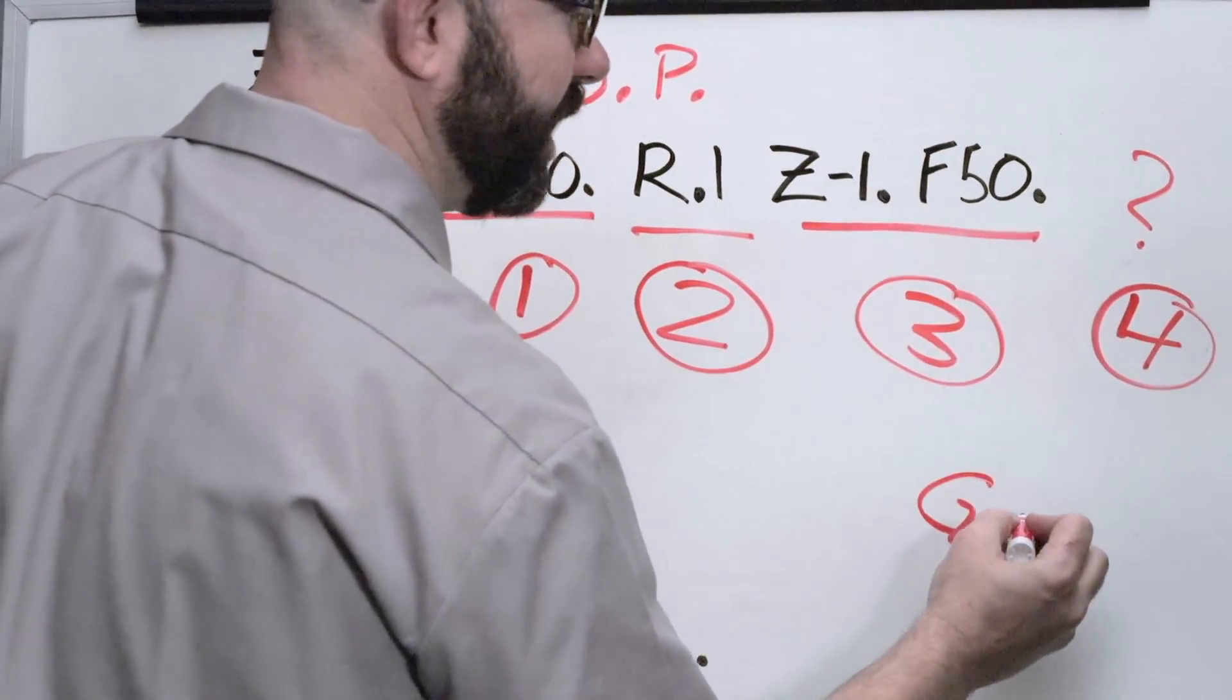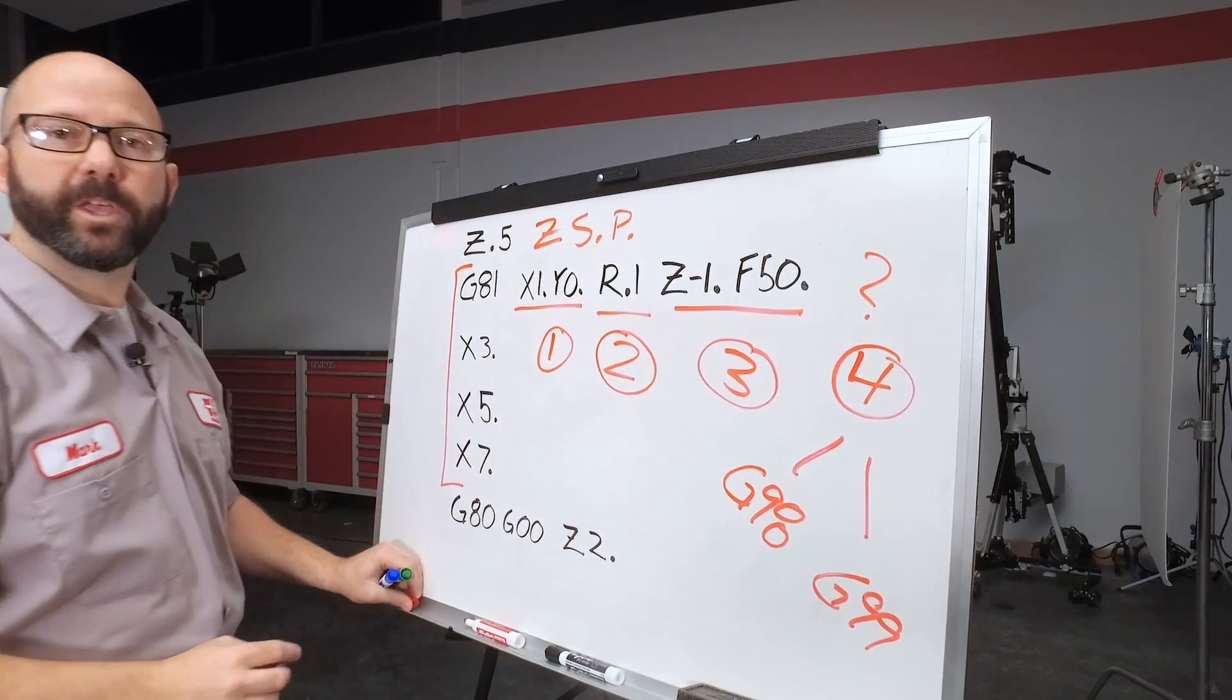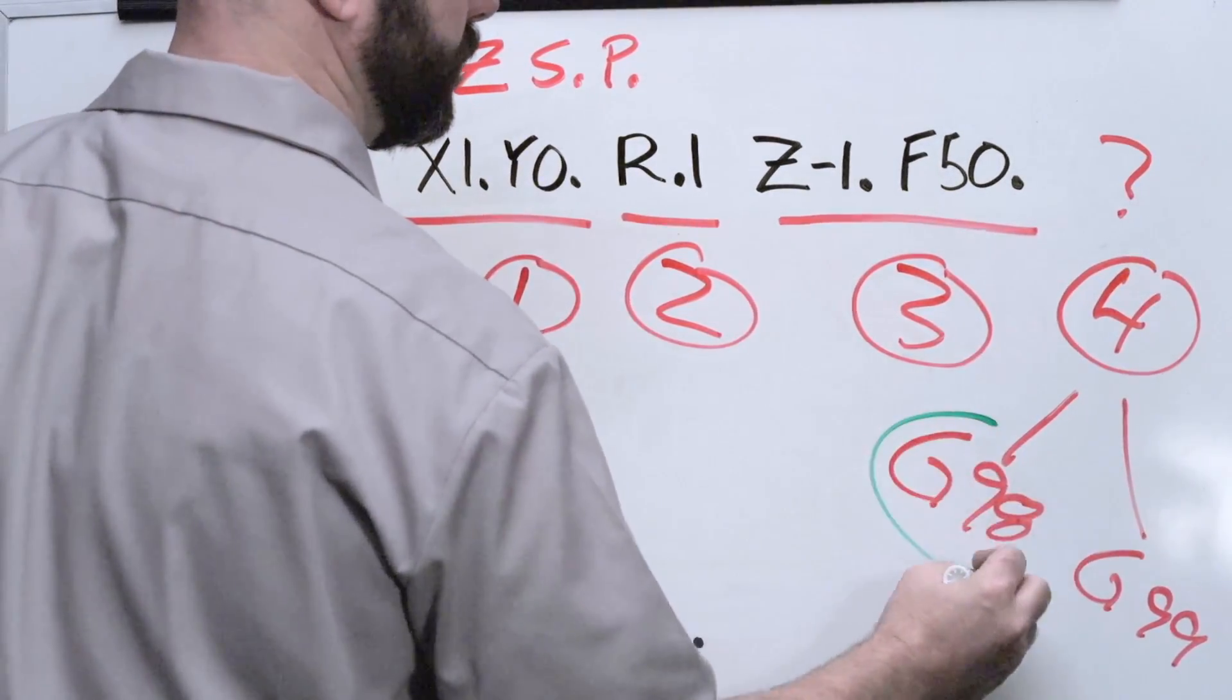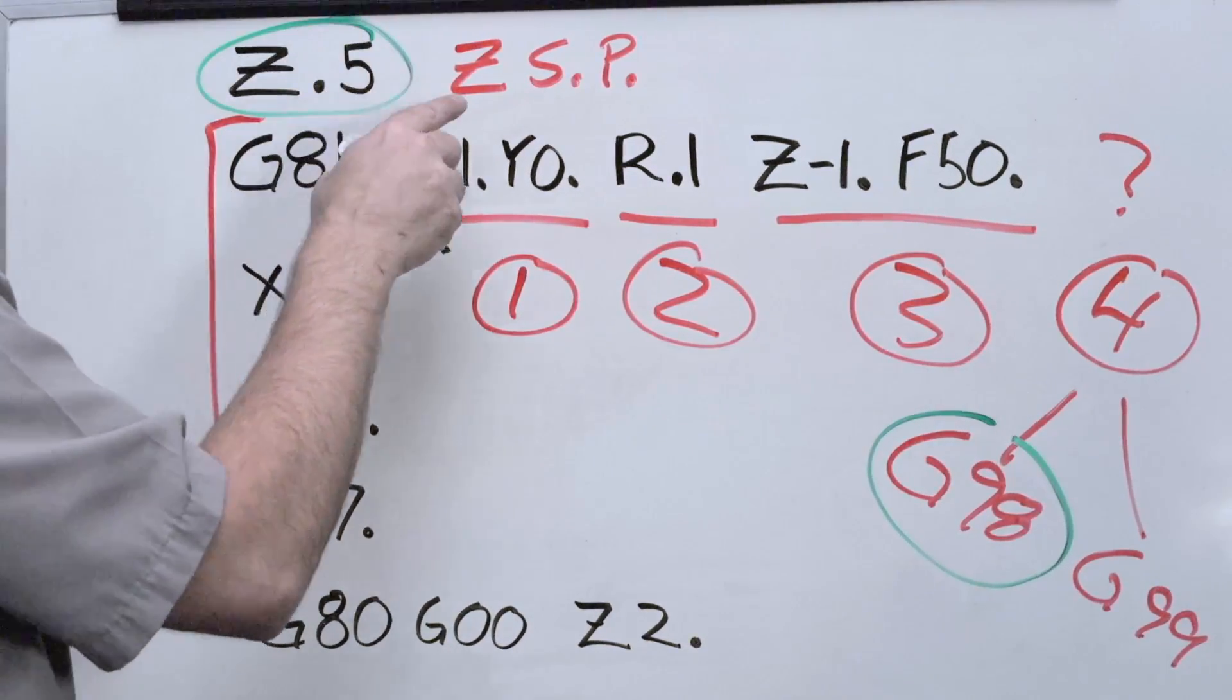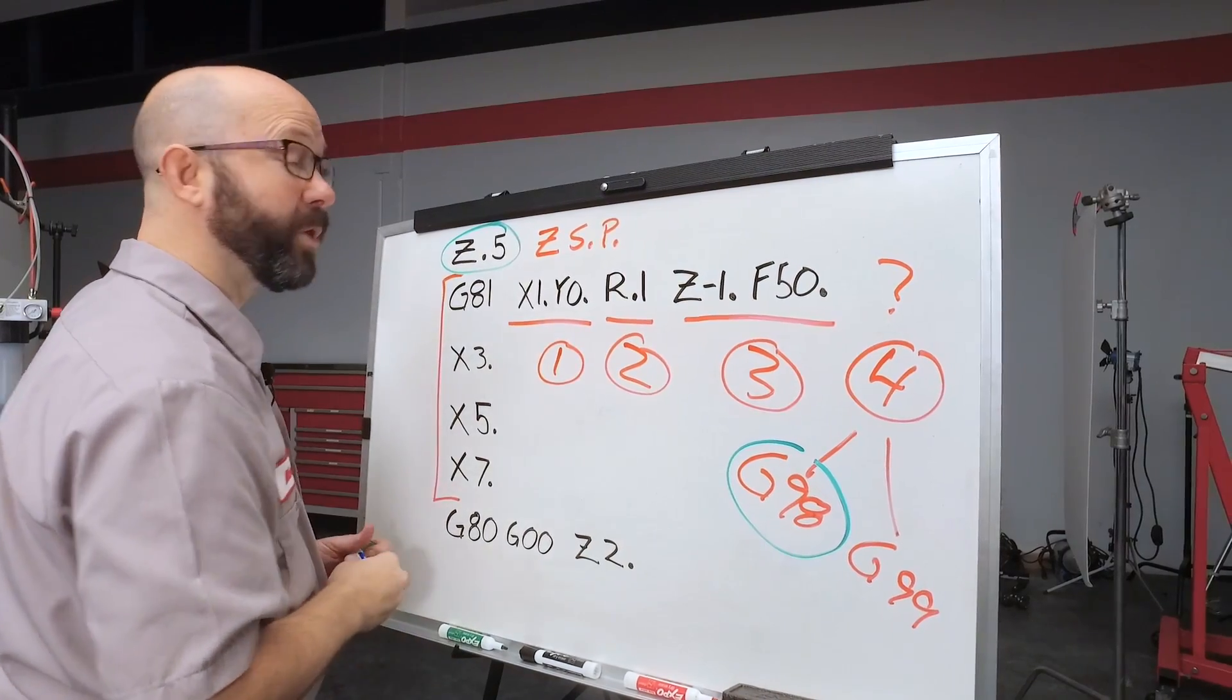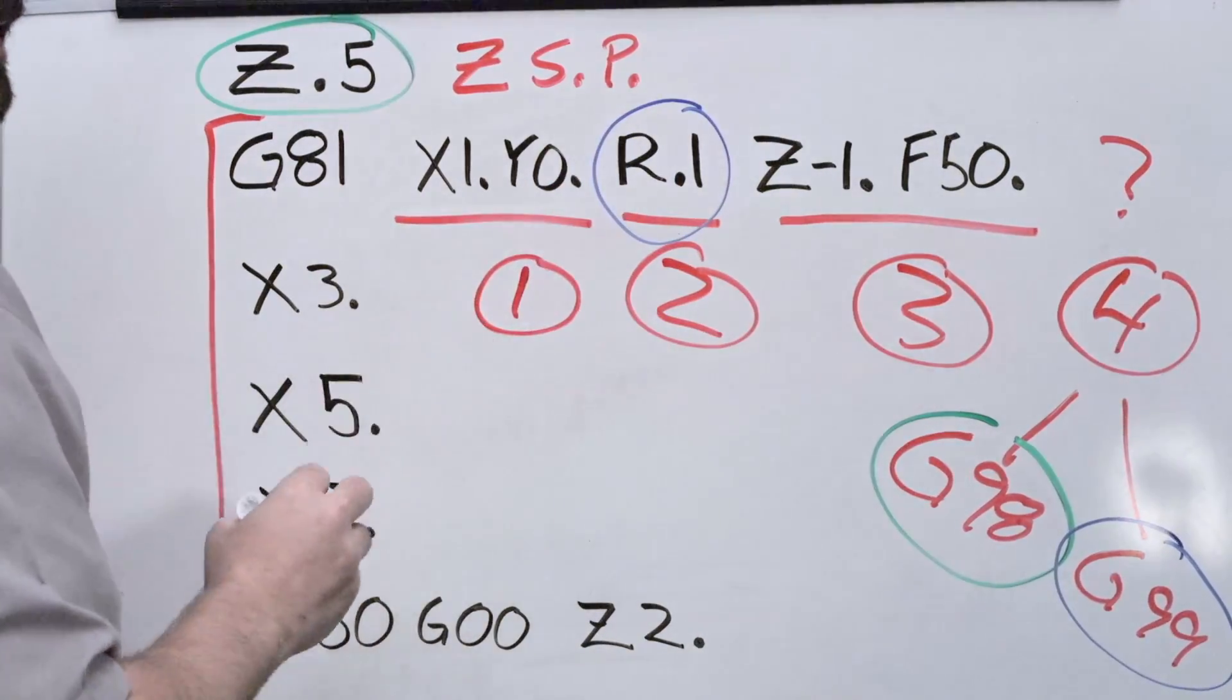We can either use a G98 or a G99. Now, if we use a G98, the tool, after it's done drilling the hole, is going to rapid back up to that Z starting position that we talked about earlier. If we use a G99, that tool is going to rapid back to our R plane.